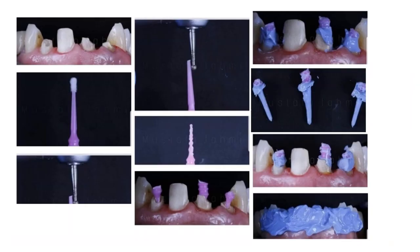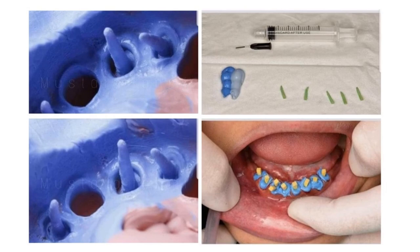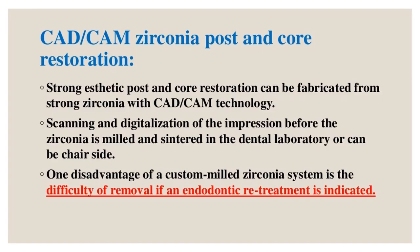CAD/CAM zirconia post and core restoration: a strong aesthetic post and core can be fabricated from zirconia with CAD/CAM technology through scanning and digitalization of the impression before the zirconia is milled and sintered in the dental laboratory, or chairside. One disadvantage of a custom-milled zirconia system is the difficulty of removal if endodontic retreatment is indicated.